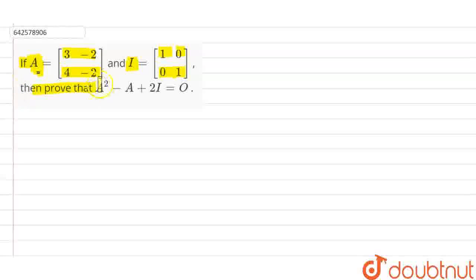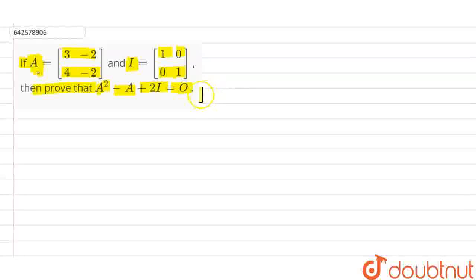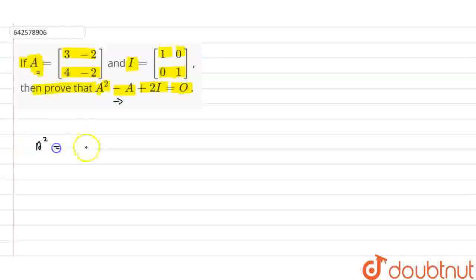We have to prove that A squared minus A plus 2I equals matrix O, which is the matrix with all elements 0 — a 2×2 zero matrix. To prove this, we first need to find the value of A squared.